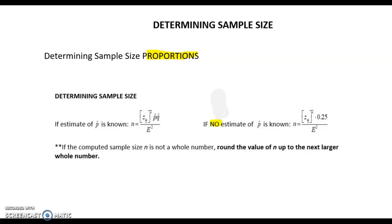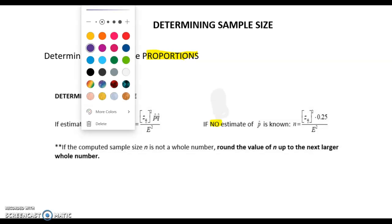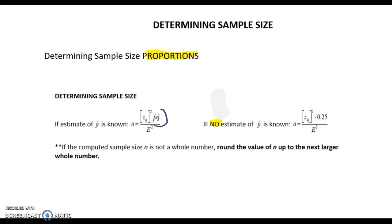If no point estimate is known, we replace the P hat Q hat with 0.25. So we do that when we don't have a best point estimate.